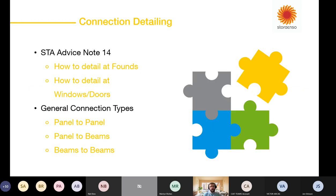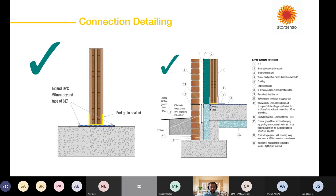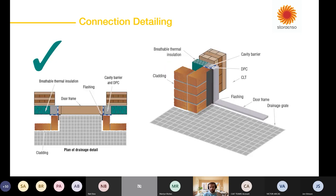The next part covers connection detailing — foundations, beam-to-beam, and panel-to-panel connections. A lot of this comes from the Structural Timber Association's Advice Note 14, which has been developed by many industry experts and is a great guide on how you should be detailing with mass timber. It gives really good diagrams on things like end-grain sealing — a way to protect the end grain from moisture being absorbed up into the timber during construction — your DPC membrane, where to add insulation, and what kinds of installations really work with CLT, with nice 3D images as well.